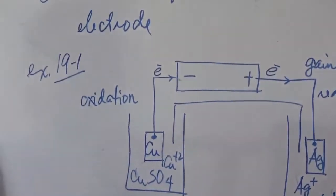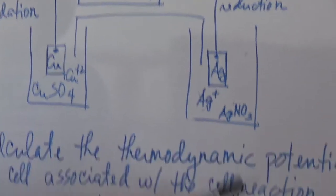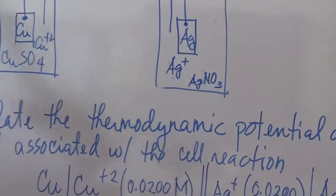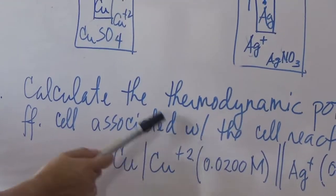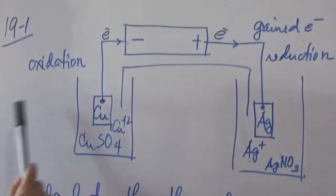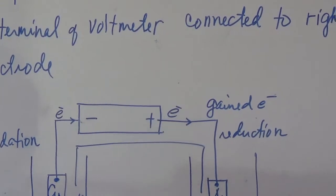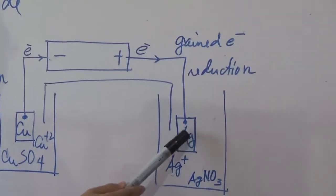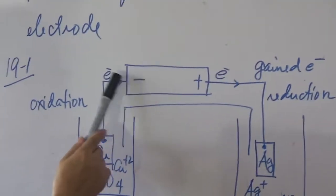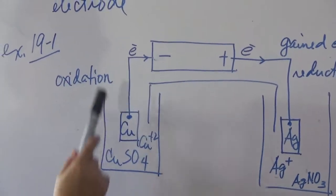For example, given the setup: the right side has the silver ion with its concentration and the silver electrode; the left side has the copper²⁺ solution and the copper electrode. For the voltmeter, the positive terminal is always connected to the right-hand electrode, and the negative terminal is connected to the oxidation electrode.